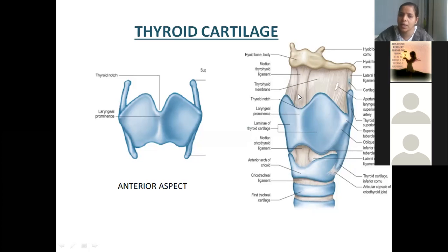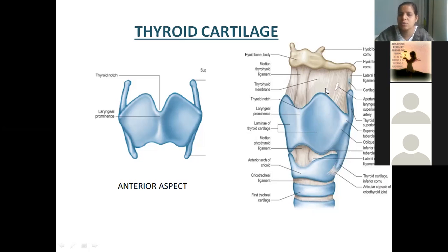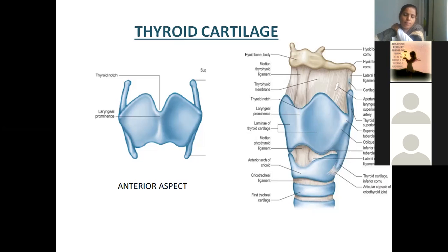Once you observe the thyrohyoid membrane, you are finding laterally there is an opening. This side also there will be an opening. So this is an aperture which allows the passage of the internal laryngeal nerve and superior laryngeal artery. The internal laryngeal nerve goes inside to supply the interior of the larynx, and also the superior laryngeal artery goes inside to supply the interior of the larynx.